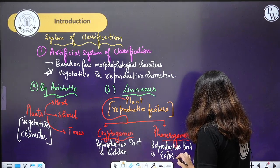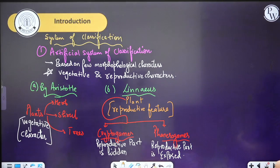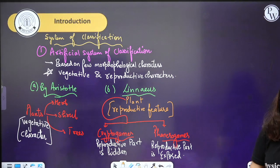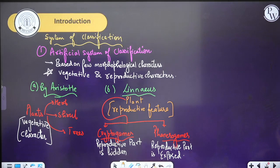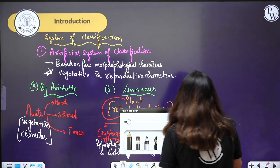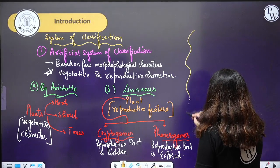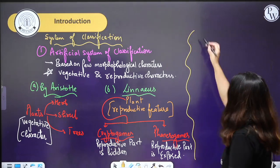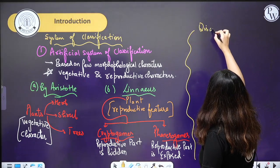On the basis of whether the reproductive part is hidden or exposed, Linnaeus divided plants into two groups: cryptogames and phanerogames. Whereas Aristotle, on the basis of height of stem, divided plants into herb, shrub and trees. Now we are going to discuss the delimitations and disadvantages of the artificial system of classification.